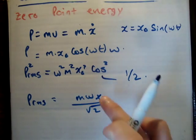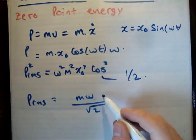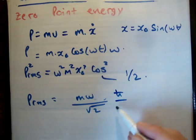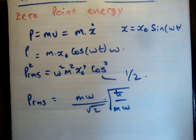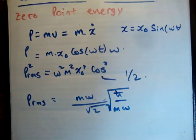Alright, but what's x naught? We found that out earlier on, x naught was equal to the square root of h bar over m omega. That's p r ms.